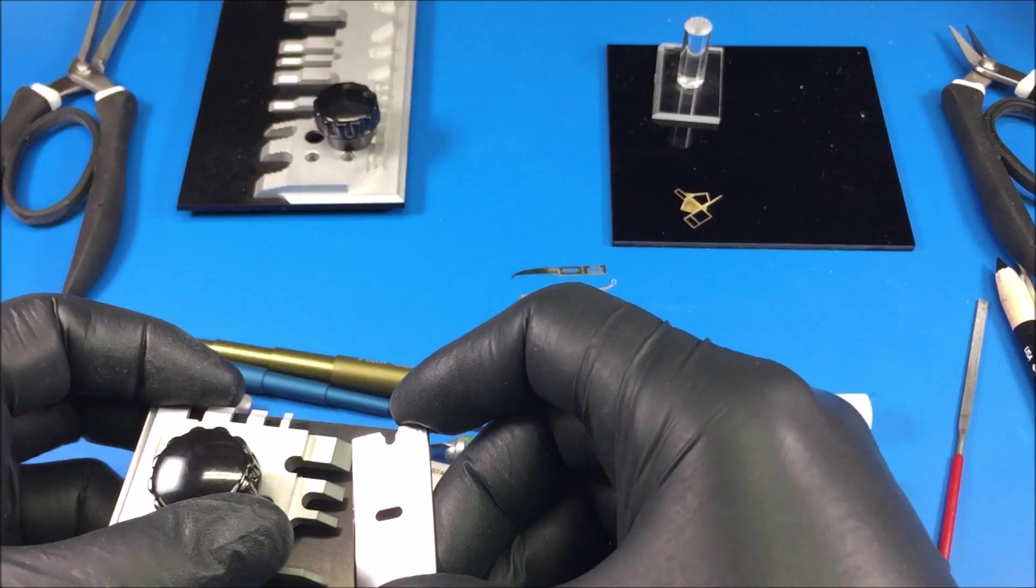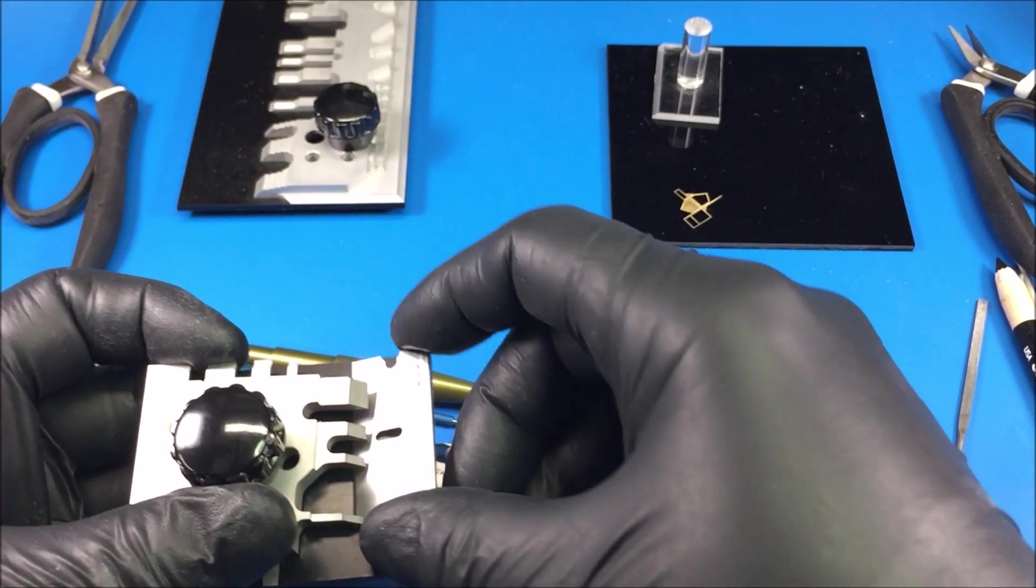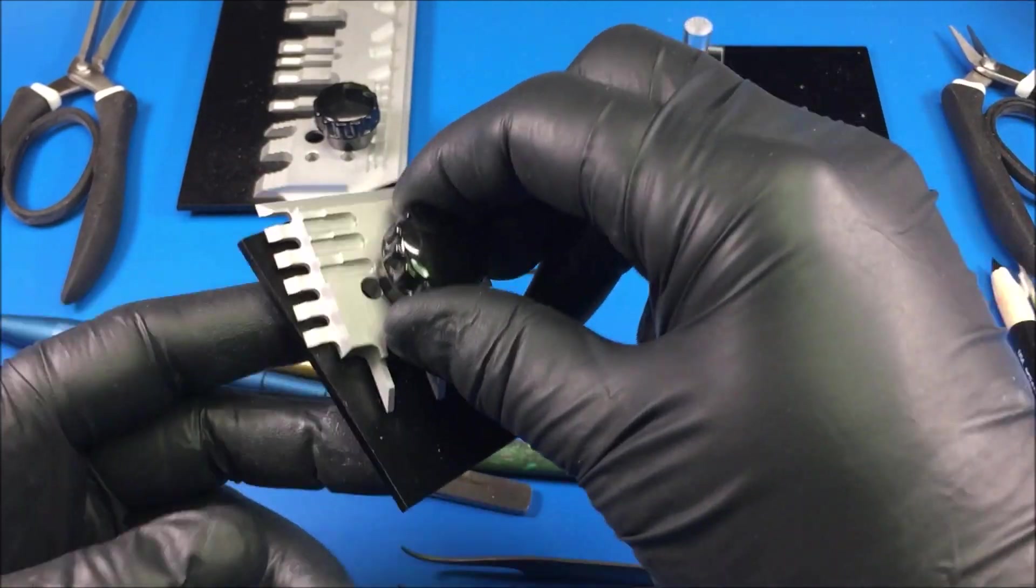Then of course you need a blade of some kind to use in the brake itself to fold up the pieces, so that comes in handy. Some of these come with plastic ones like this that you would use for bending up the photo etch.